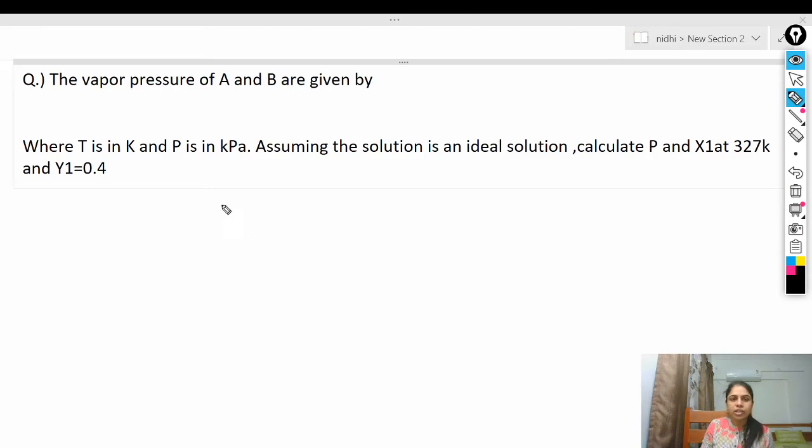The total pressure is 50 kilopascal. Now we need to find out x1. So x_A = Y_A × P / P_A^s. x_A = 0.4 × 50 / 85.12, so when you solve this, x_A will be equal to 0.236.